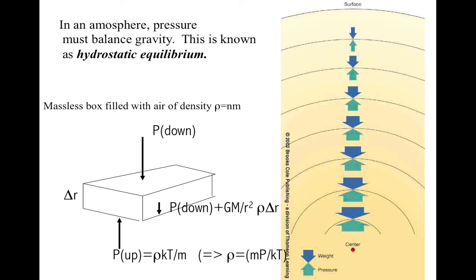And what you have for forces are you have the downward pressure on the top of the box. And then this box, which has some finite thickness, has that downward pressure on it plus the downward force due to the weight of the gas that's in the box, which is just the acceleration of gravity, GM/r², times the mass of stuff in the box, which is the density ρ times the thickness of the box times the area.